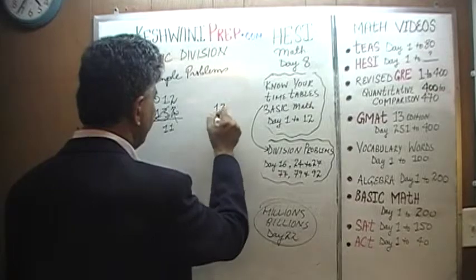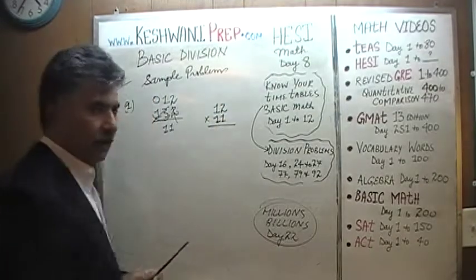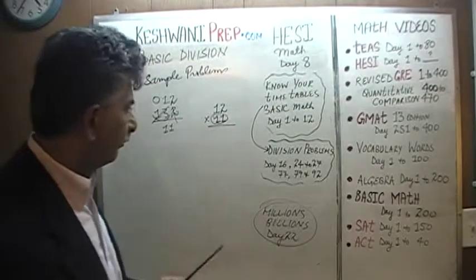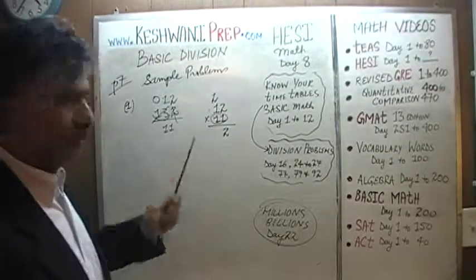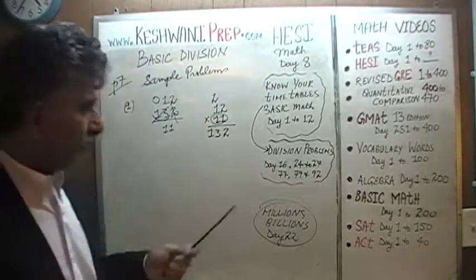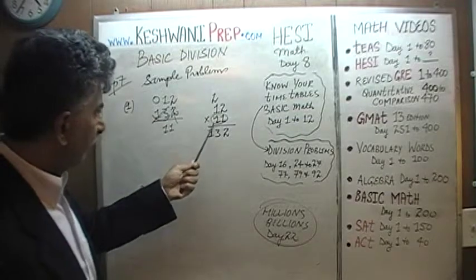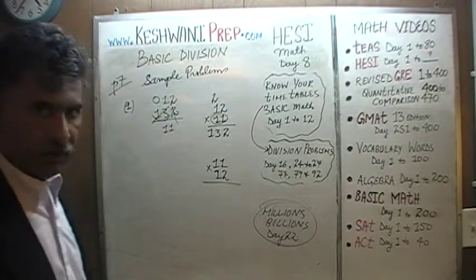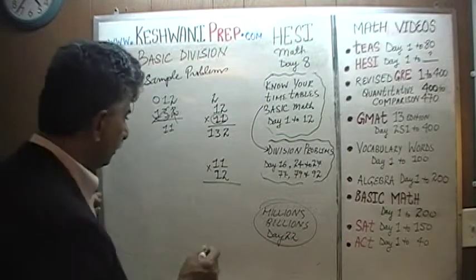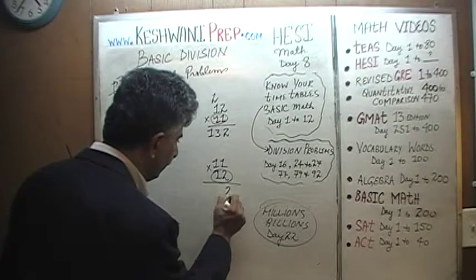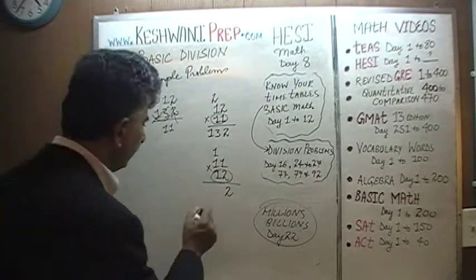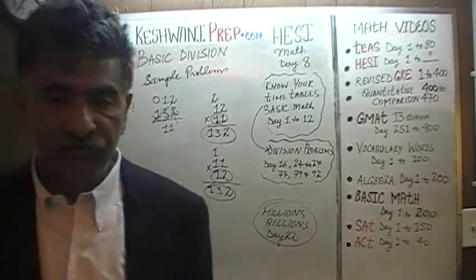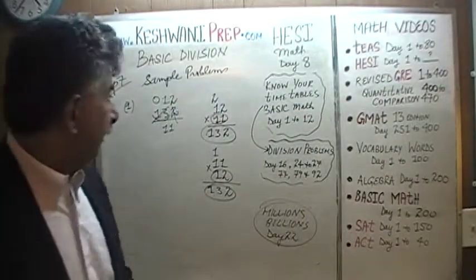If you want to verify it, multiply 12 by 11. We are not going to multiply one digit at a time — we are going to multiply by 11 as a whole. 11 times 2 is 22, carry 2. 11 times 1 is 11, plus 2 is 13. We could also do 11 times 12 instead of 12 times 11 — it would not change anything. We multiply by 12 as a whole: 12 times 1 is 12, carry 1; 12 times 1 is 12, plus 1 is 13. As you can see, it doesn't matter how you do it — we get back to 132, which tells us our answer is correct. 132 divided by 11 is indeed 12.